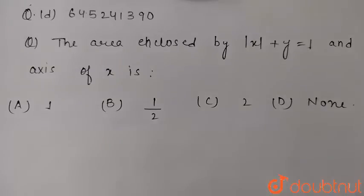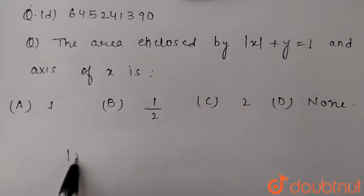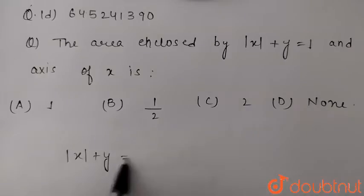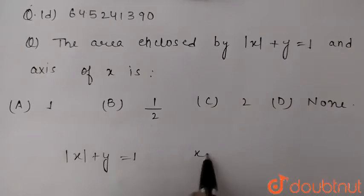In this question, we have to find the area enclosed by |x| + y = 1 and the x-axis. So the equation given is |x| + y = 1 and x-axis.